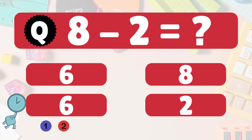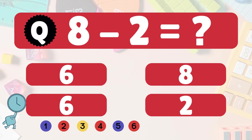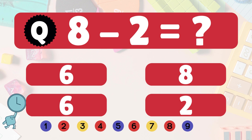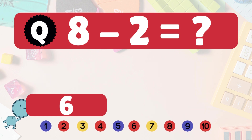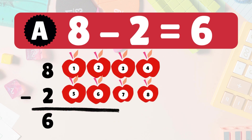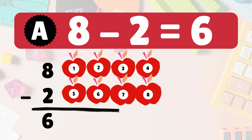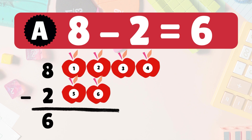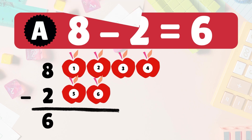Next: 8 minus 2 is 6. Here we have 8 apples. Take 2 away. 6 apples left: 1, 2, 3, 4, 5, 6. So 8 minus 2 is 6. You're getting it!